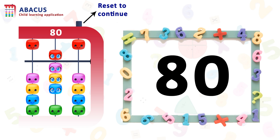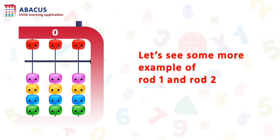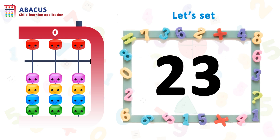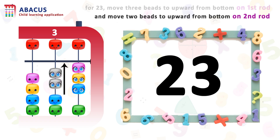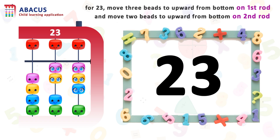Let's see some more examples of two digit numbers on rod 1 and rod 2. Here we have the number 23. So let's set 23. For 23, we have to set 3 on rod 1 and set 20 on the tens column, rod 2. First move 3 bits upward from the bottom on rod 1, and now move 2 bits upward from the bottom on rod 2. And here we get 23.